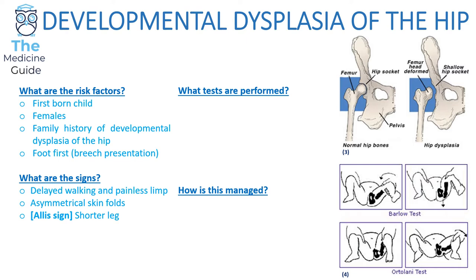A child will present with delayed walking and a painless limp. They will have asymmetrical skin folds — the leg affected by developmental dysplasia of the hip will have extra skin folds present. Also, leg length discrepancy will be obvious; that hip will have a shorter appearance because the hip muscles will undergo atrophy, which is why that particular leg will appear slightly shorter.